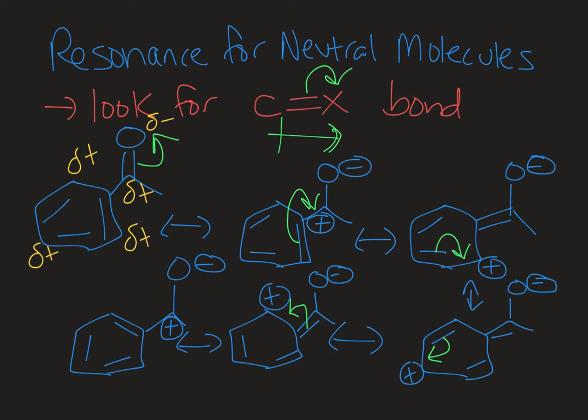Don't exceed the octet rule for second row elements, and each structure should have the same formal charge all the way through. This has been a look at how to draw resonance structures for neutral organic molecules.